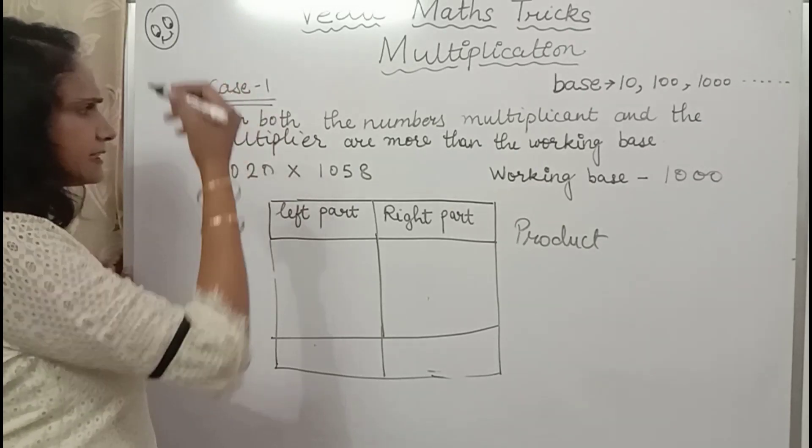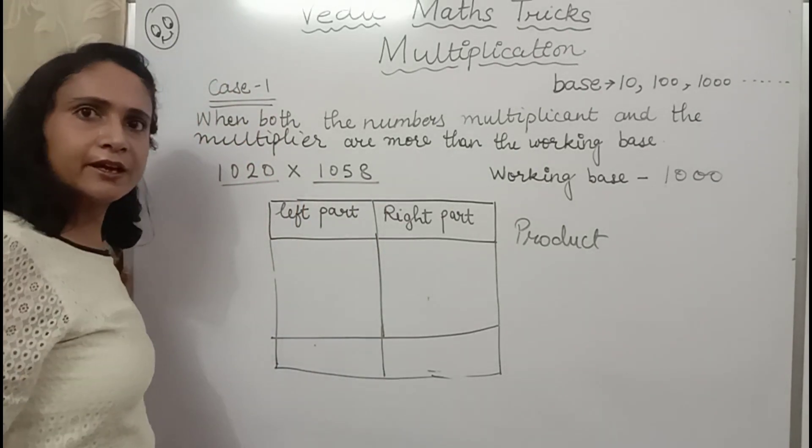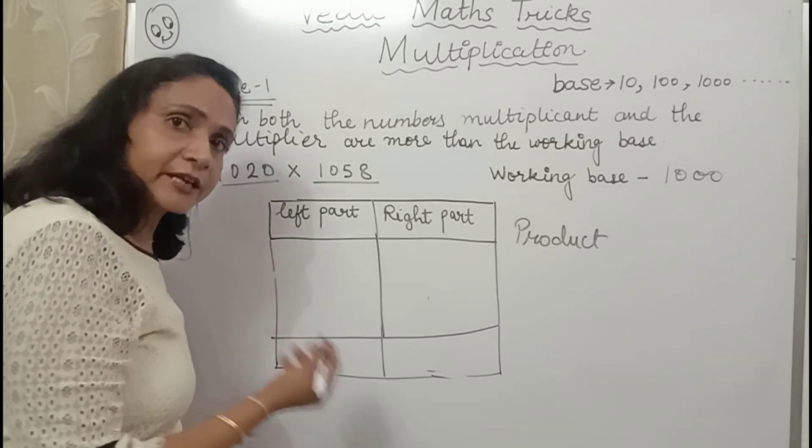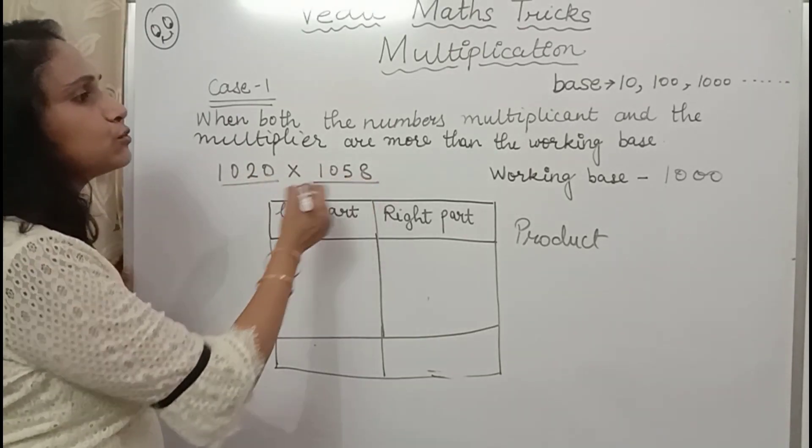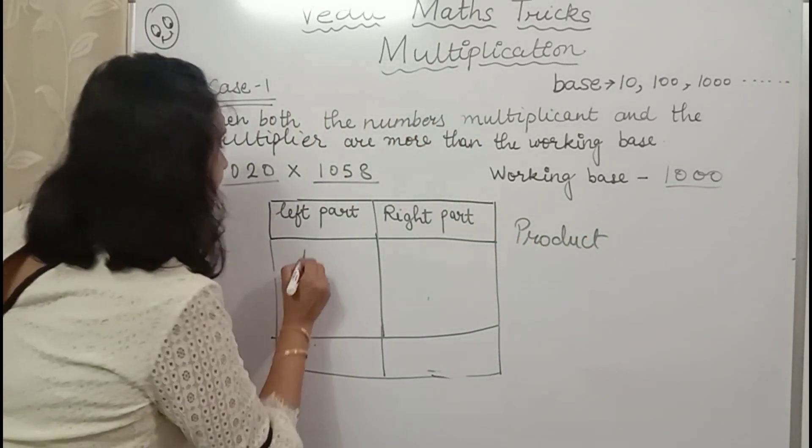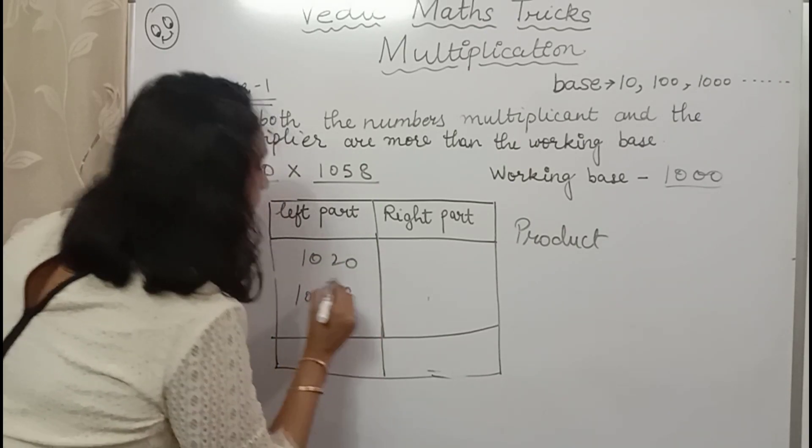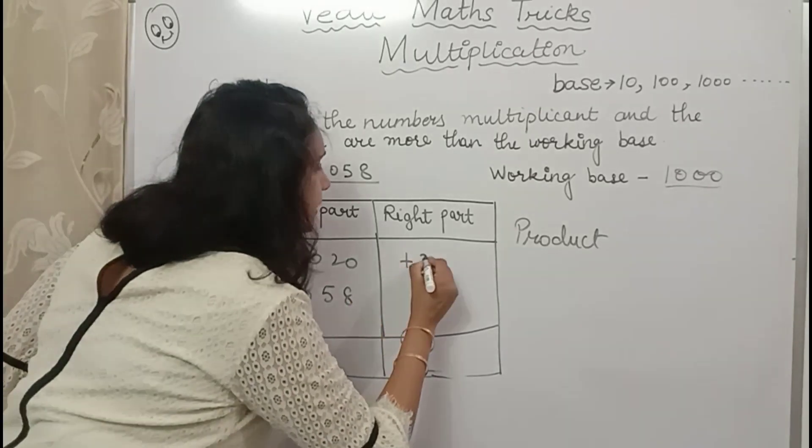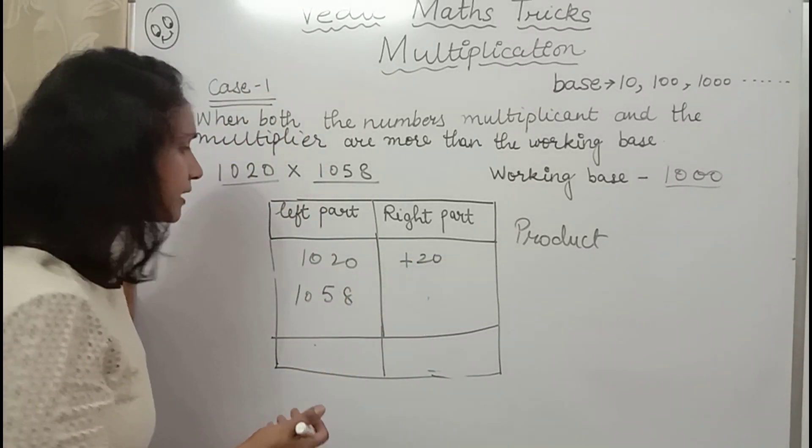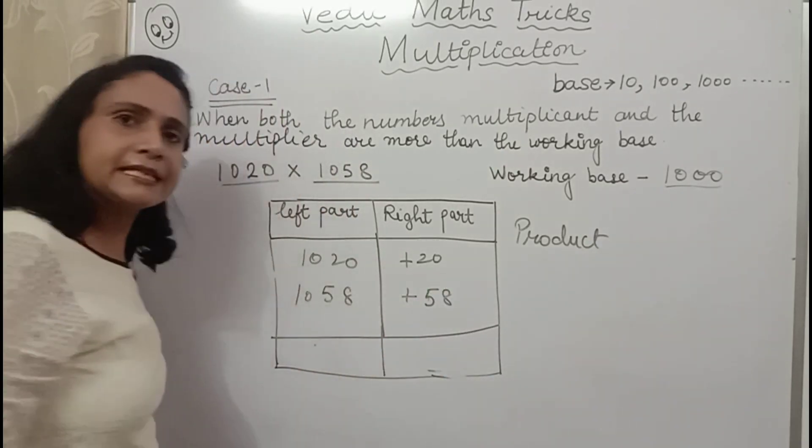Now friends, let's see this sum. Here multiplicand is 1020 and multiplier is 1058. Now my working base is, now in this sum what is my working base? These two numbers are closer to 1000. So my working base is 1000. I will write the numbers 1020, 1058. Now 1020, how much is surplus? Yes, 20 is surplus. That means 1020 is 20 more than 1000. And 1058, 58 is surplus.